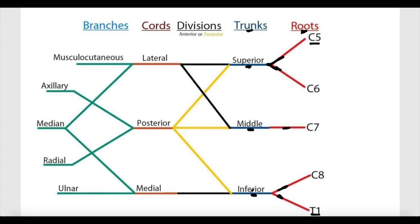Each one of these trunks will give two branches, and each of these branches is called a division. So the superior trunk will give an anterior division and a posterior division. The middle trunk will give an anterior division and a posterior division, and the inferior trunk will give a posterior division and an anterior division. So each of the trunks gives two divisions: one anterior and one posterior.